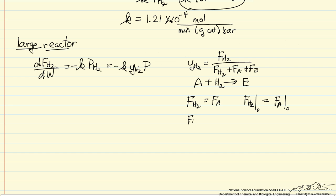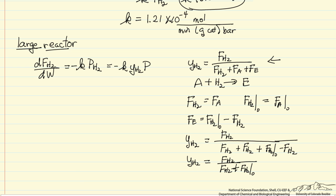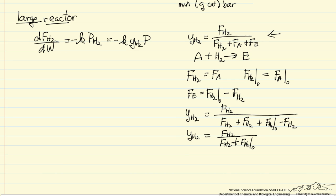Since no ethylene enters the reactor, I can write the flow rate of ethylene in terms of the inlet molar flow rate of hydrogen minus the flow rate of hydrogen at any given point — that difference is the flow rate of ethylene. Substituting these values into the equation for the mole fraction of hydrogen, it can be written just in terms of the molar flow rate of hydrogen and the inlet molar flow rate of hydrogen.